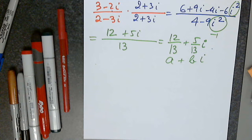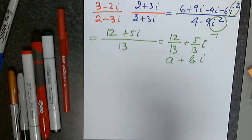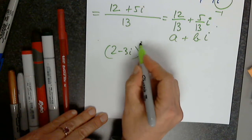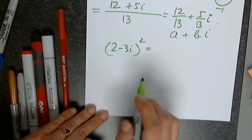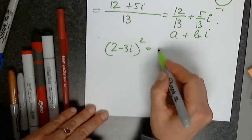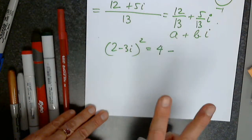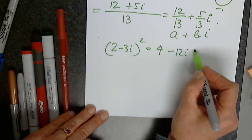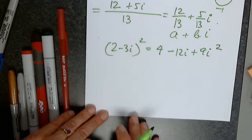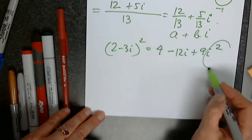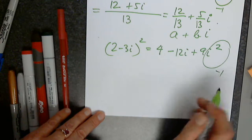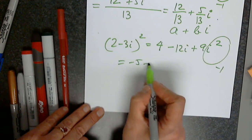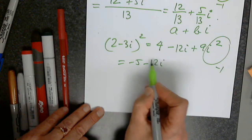6a: we have 2 minus 3i, everything squared. I have to write four terms: the first term squared gives 4, minus 2 times 2 times 3i gives 12i, plus 9i squared. I replace i squared by negative 1: 4 minus 9 gives negative 5, so the answer is negative 5 minus 12i.